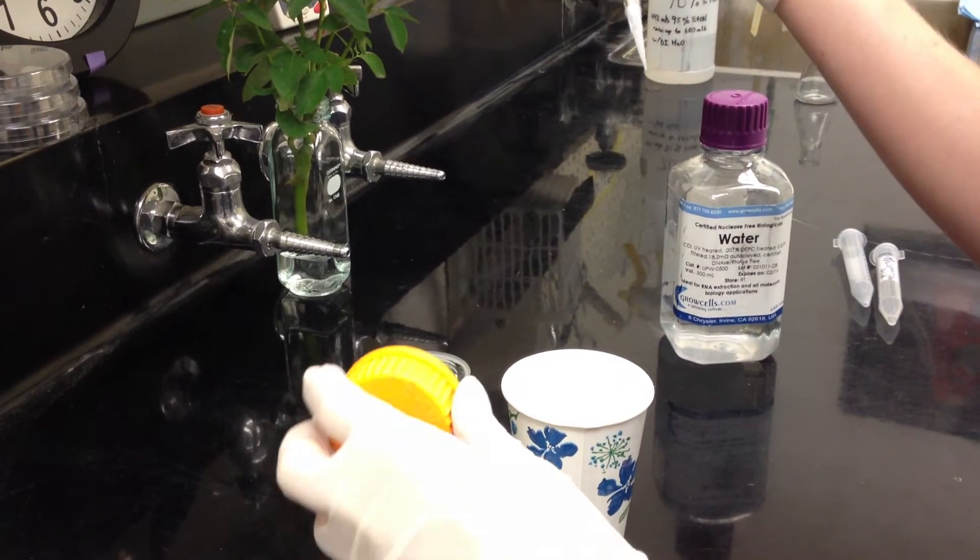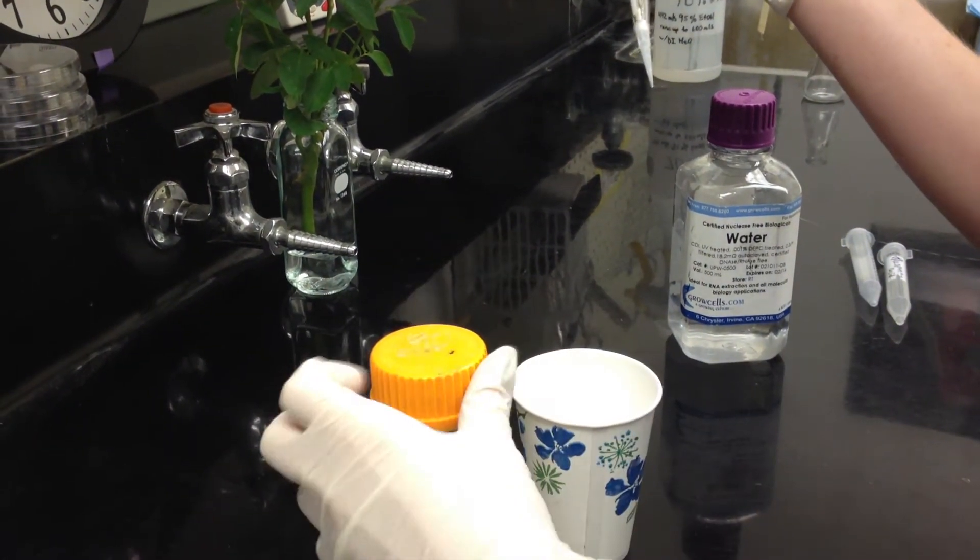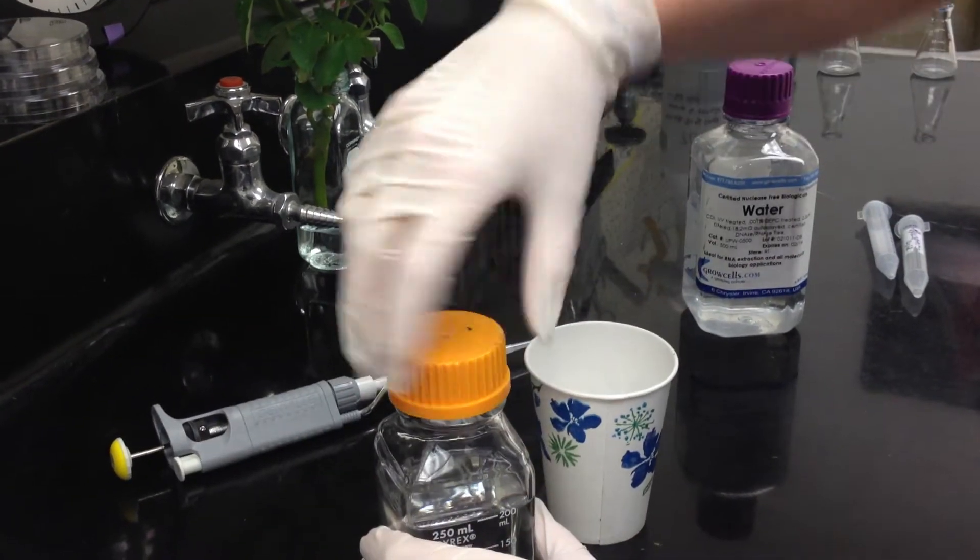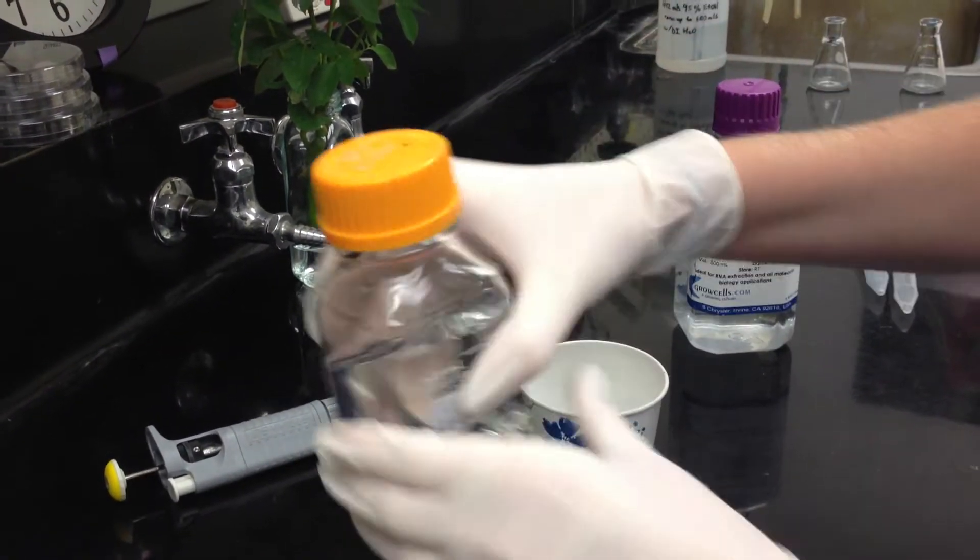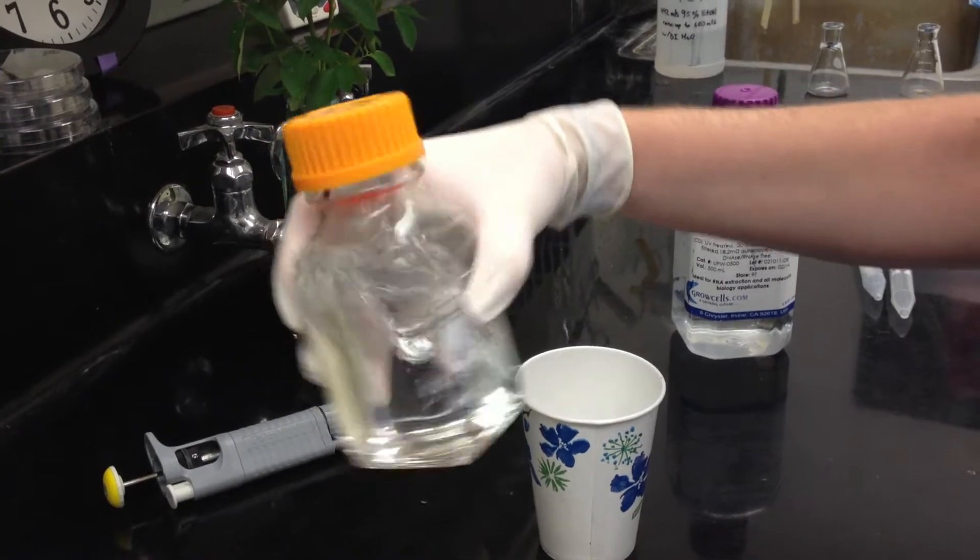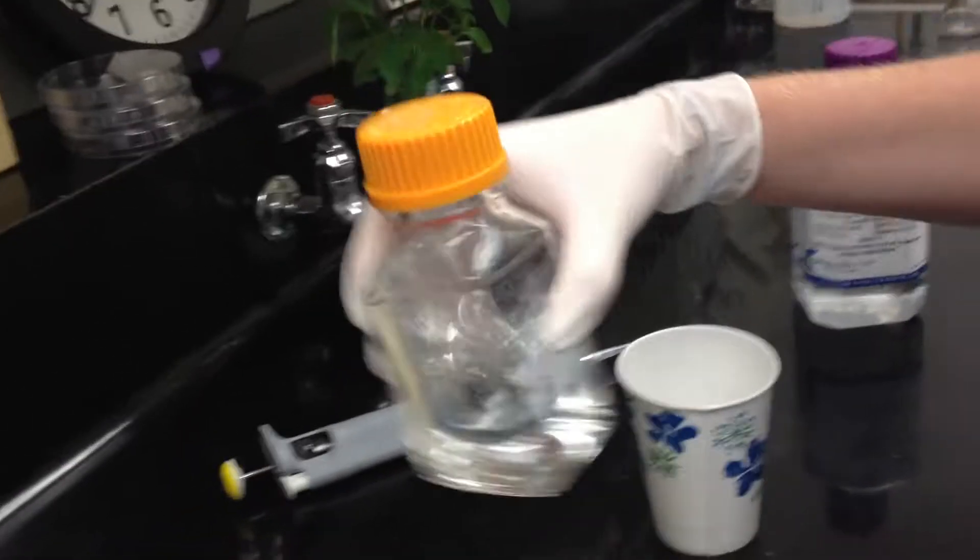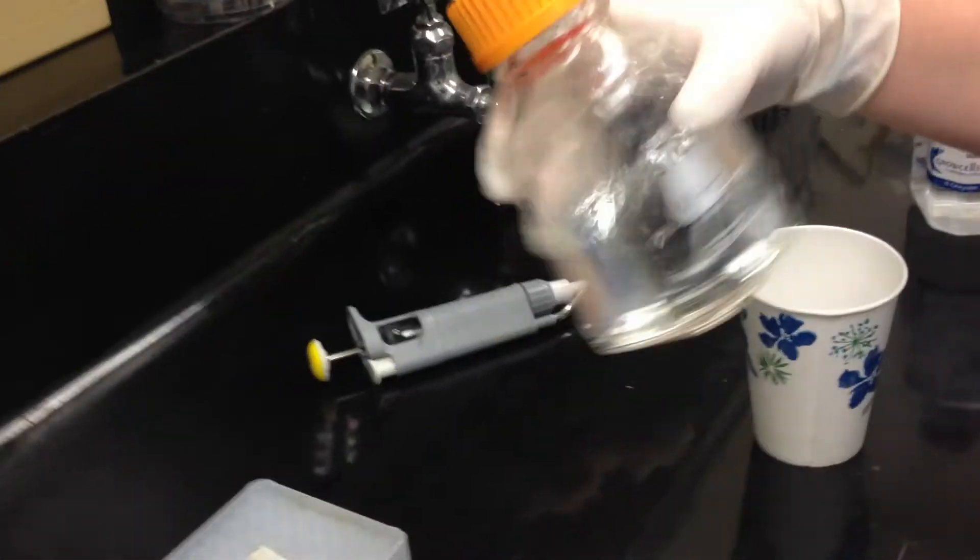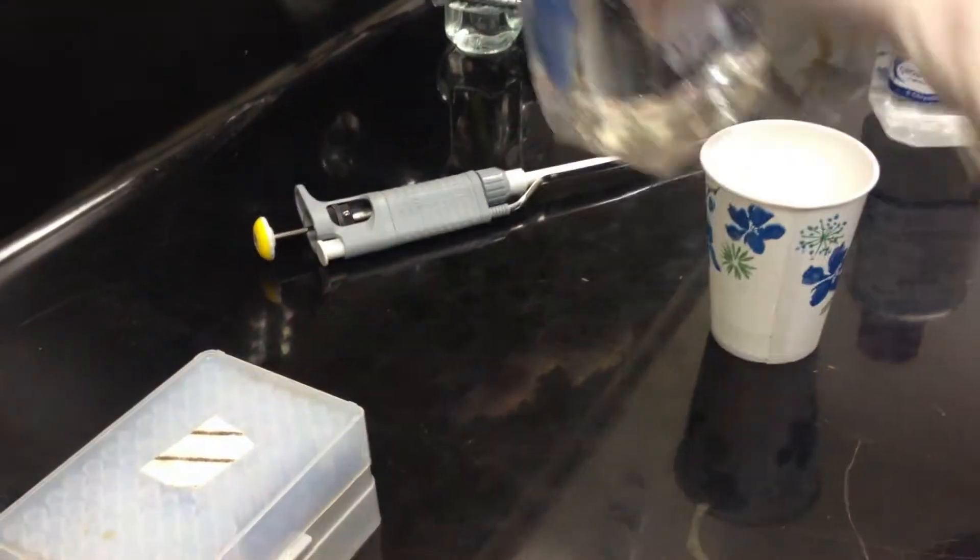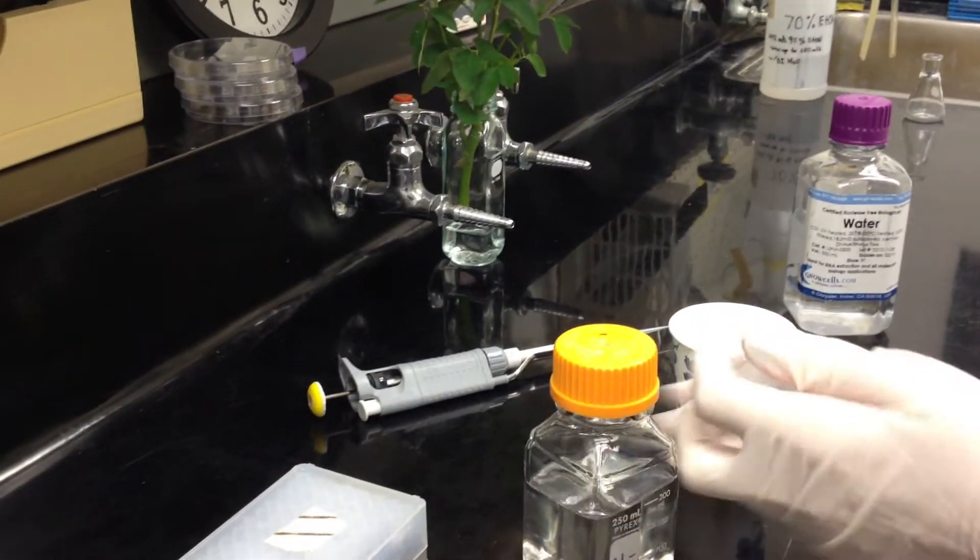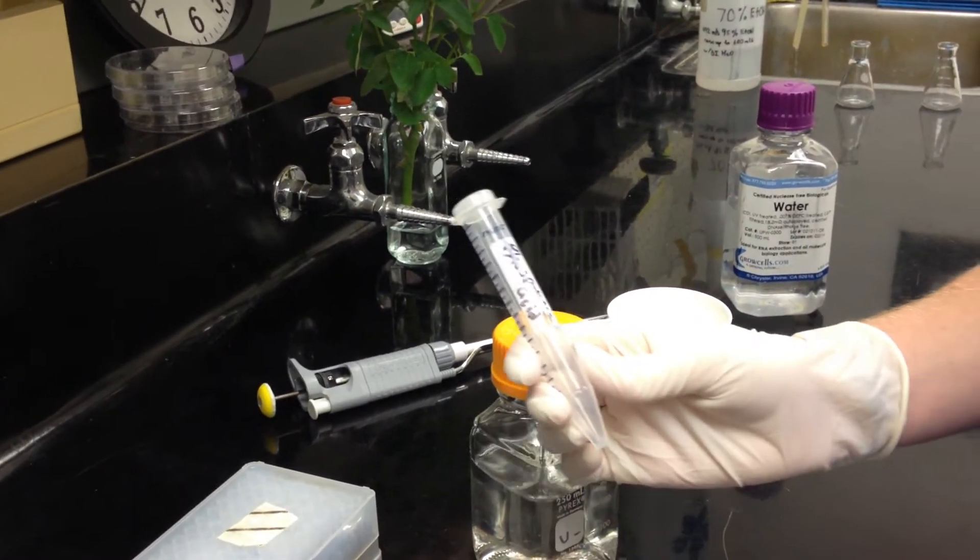Now you're going to set this aside, close the lid, and shake it. Then you're going to dispense it into 15 milliliter snap cap tubes.